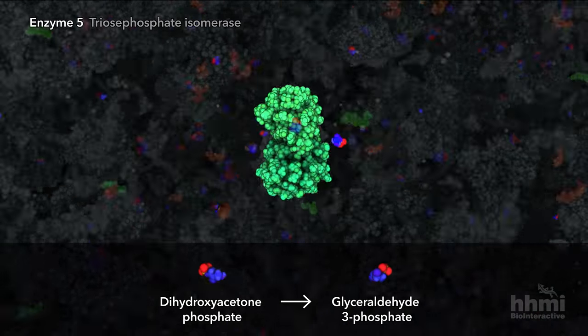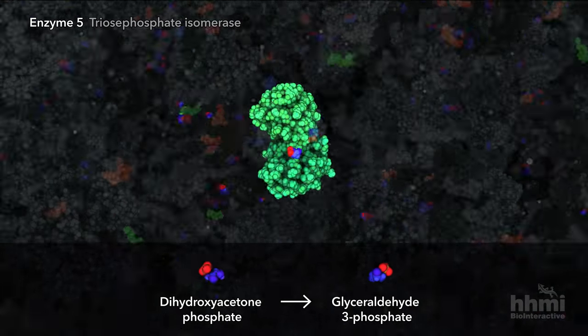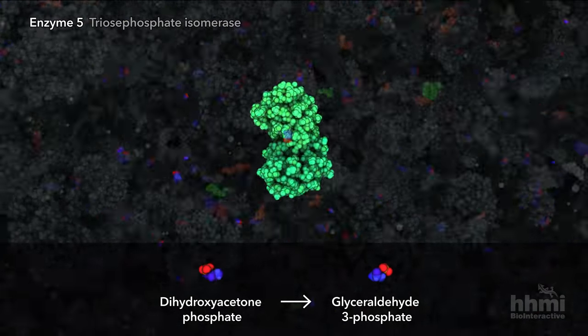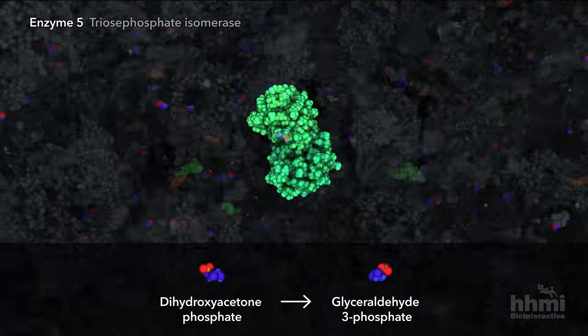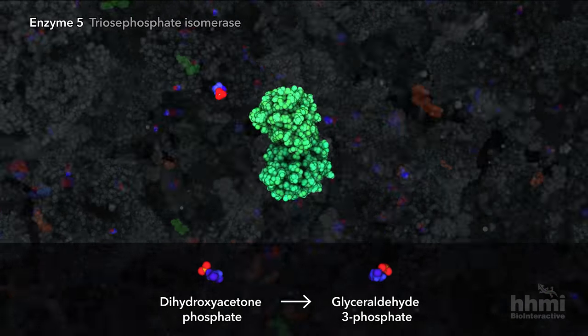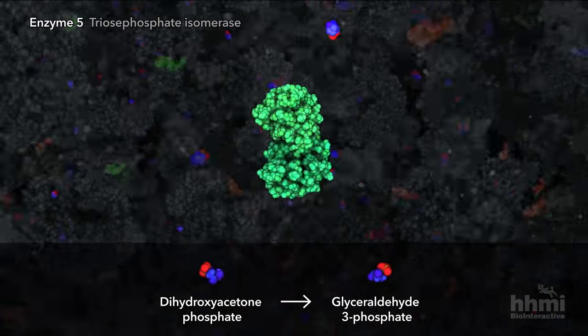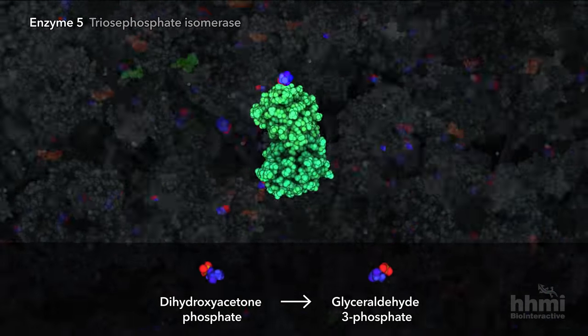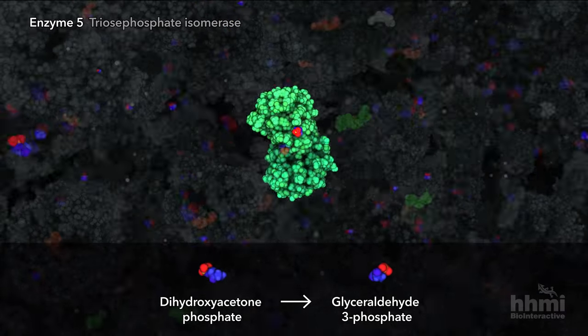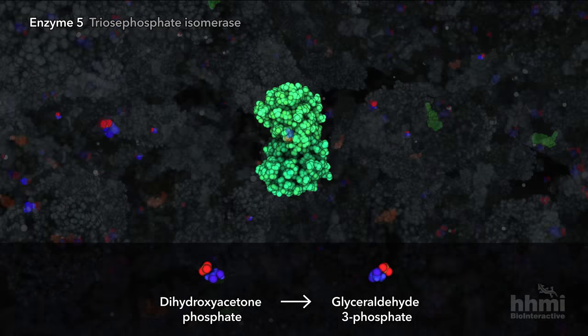The sugar isomer, dihydroxyacetone phosphate, must first be converted through isomerization before continuing to the sixth enzyme.